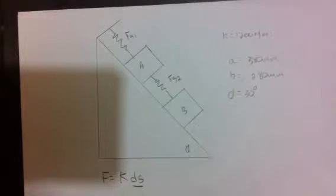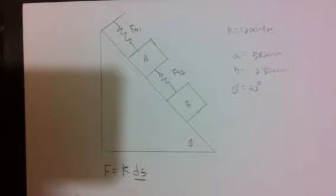We need to know some basic things from general physics. We know that F equals KX — that's Hooke's Law. We can denote DS as the displacement of the spring, which is its final length minus its initial length.